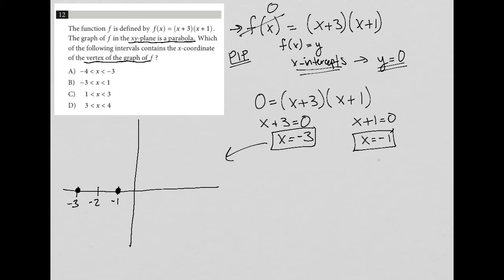I also know because the function is positive that my parabola must be facing upward. So my parabola has to do something like this. It's pretty close to how the actual parabola should look for this function.